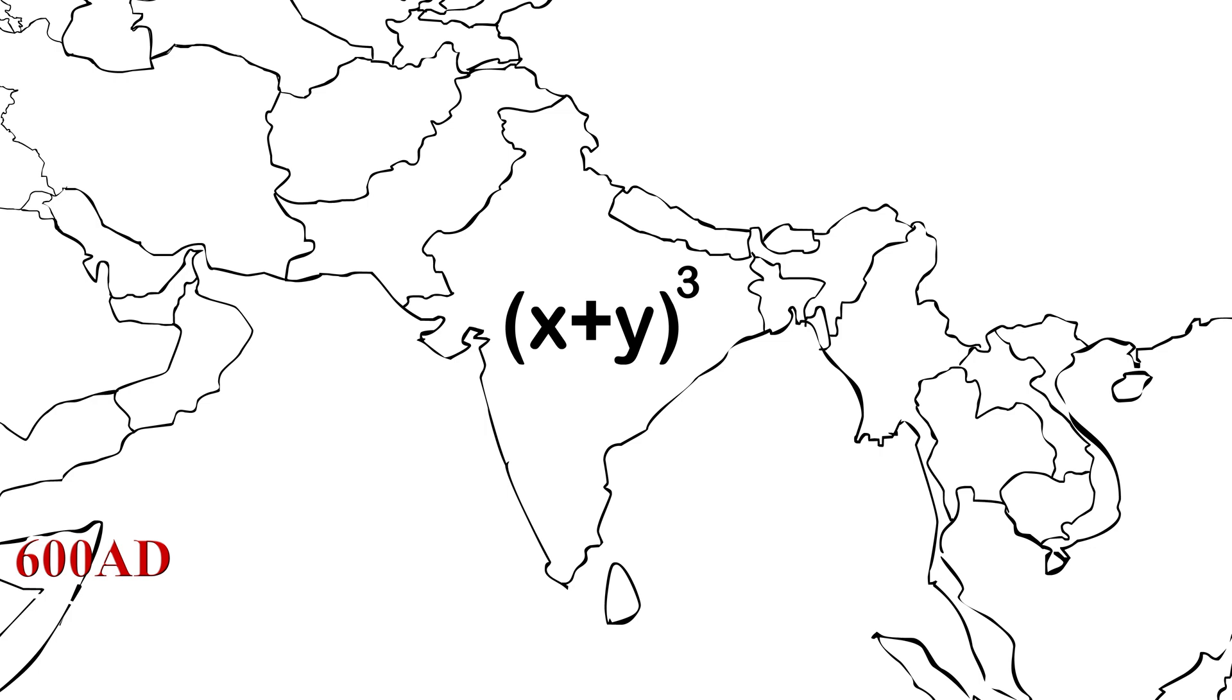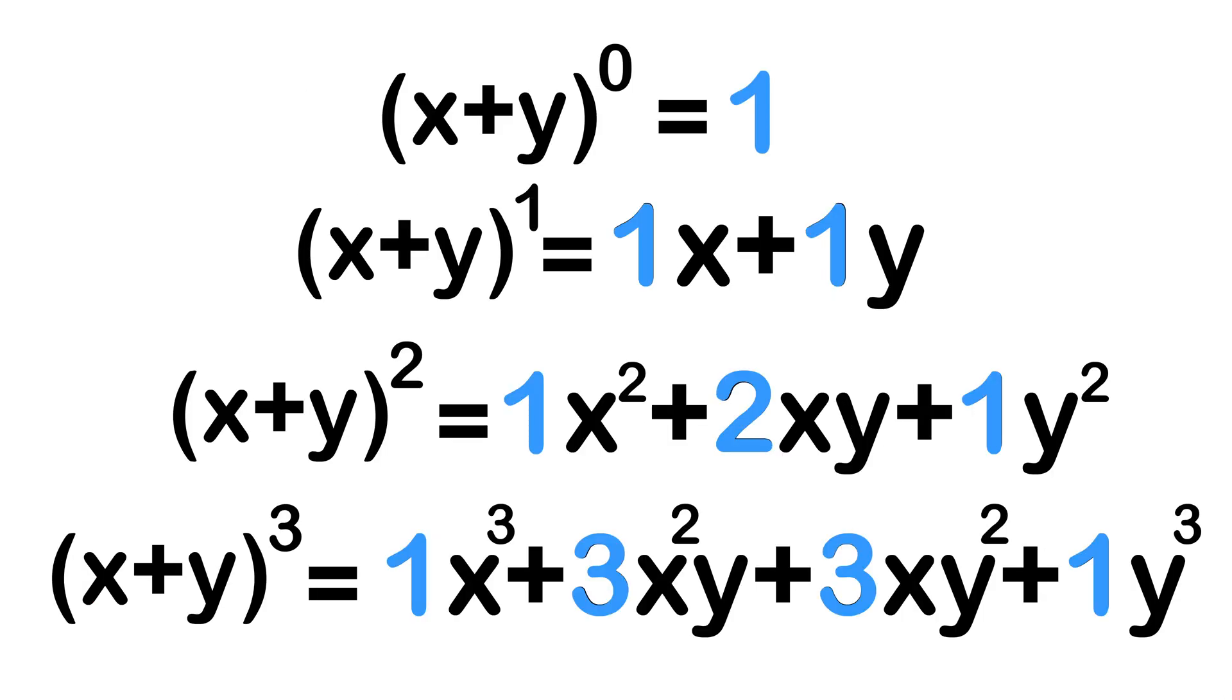When we expand the binomials, the x and y variables change in predictable patterns depending on the power of n. But there is also a pattern in how the coefficients change. Let's just focus on the coefficients and we can see that it forms a triangle.